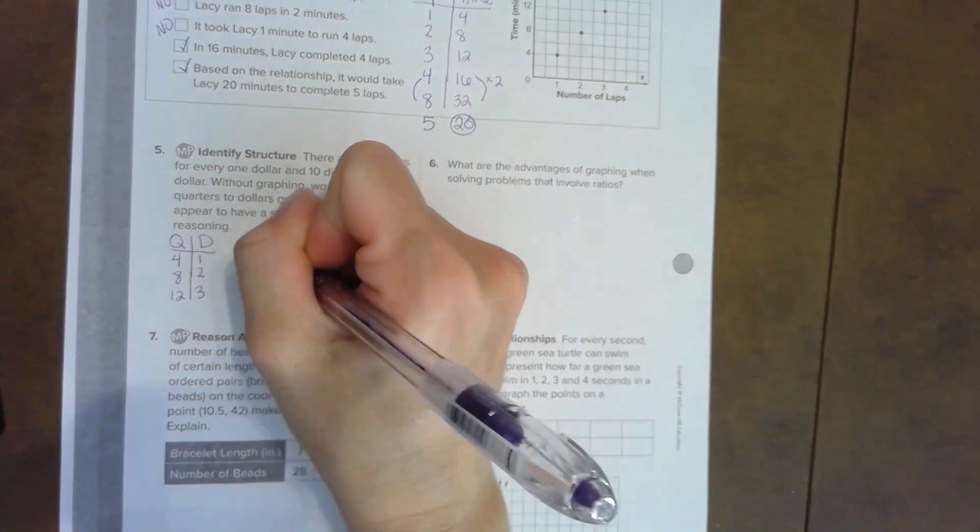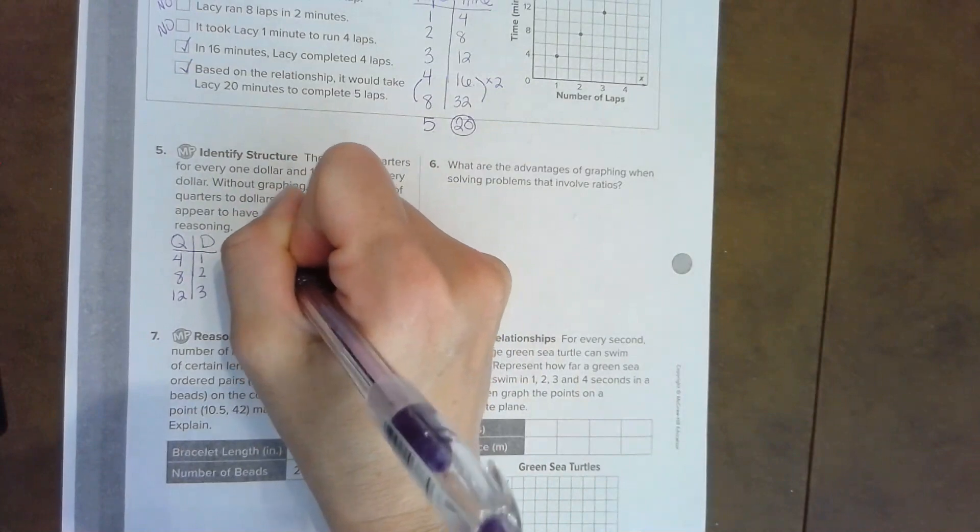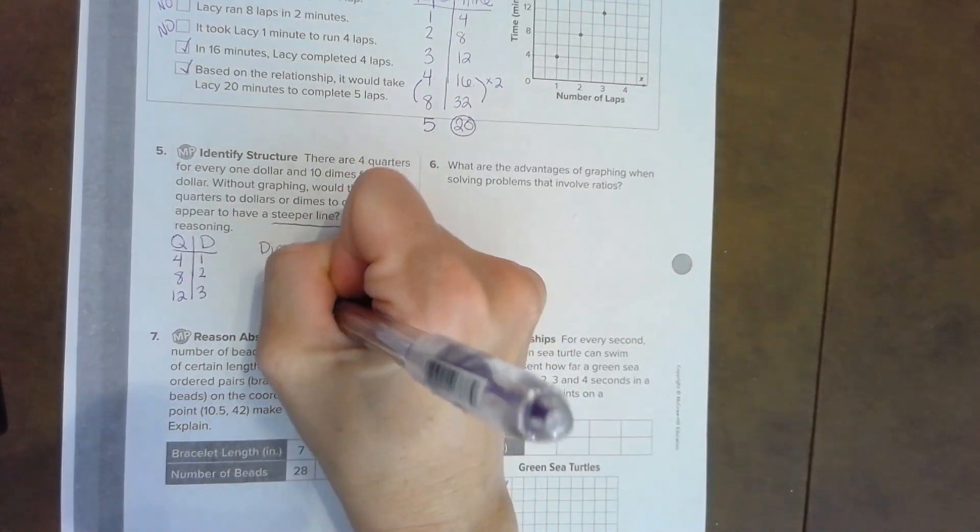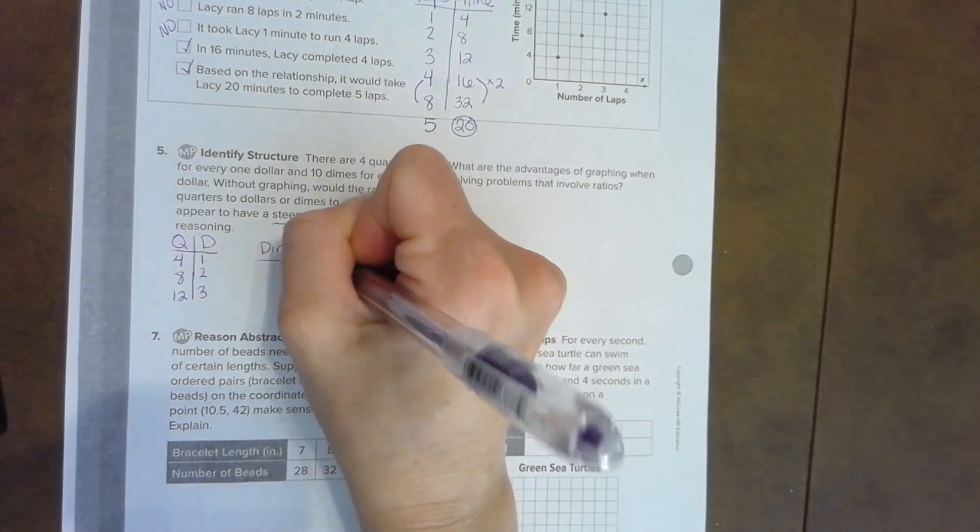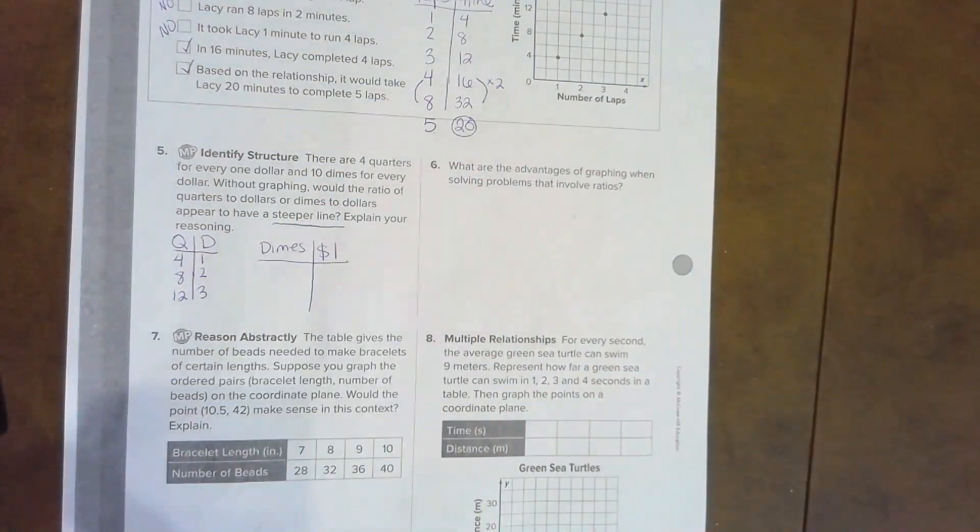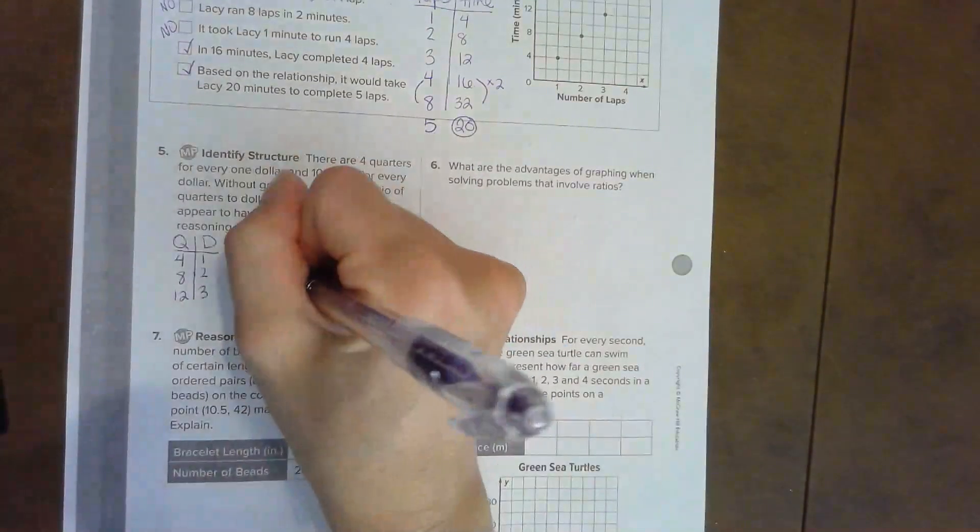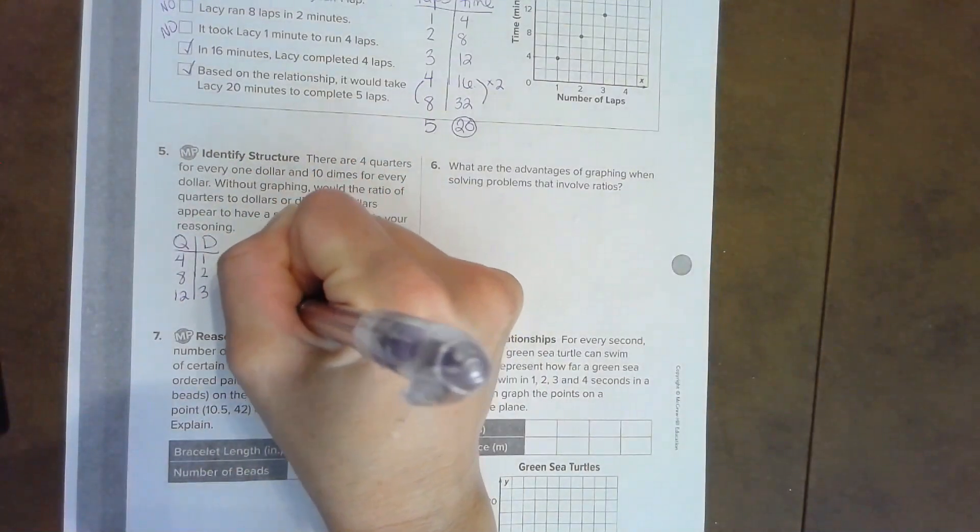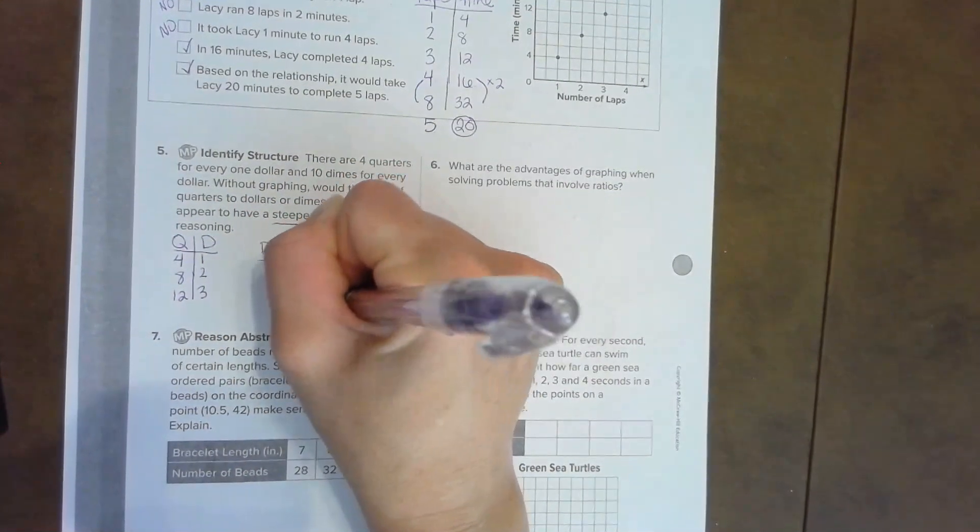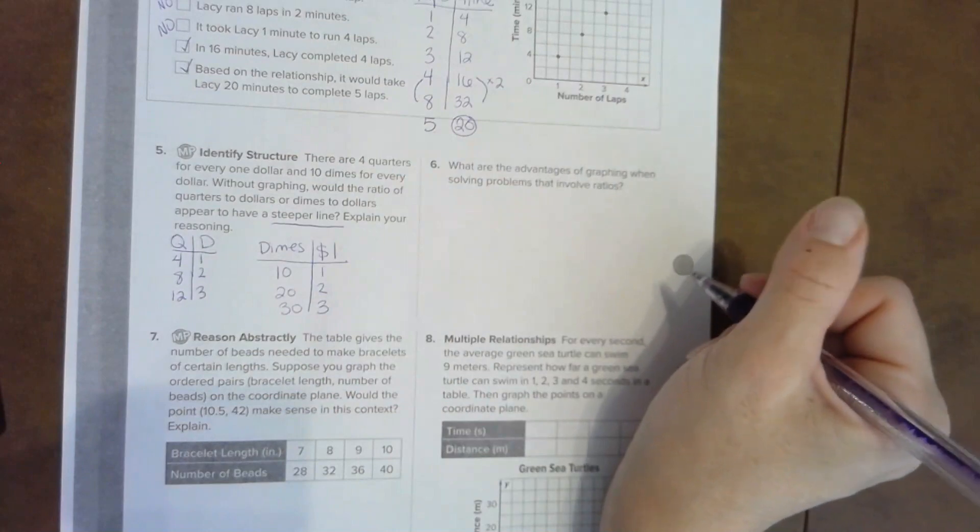And then over here, I'm actually going to write out dimes, and then I'll just put a symbol like just a dollar with a dollar sign. And then dimes, it's ten, twenty, thirty, and this is one, two, three.